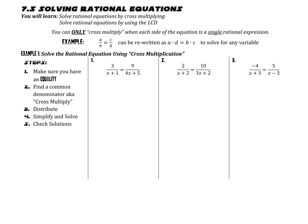If we have fractions equal to fractions, we can find a common denominator, as we talked about in the last lesson. So I could multiply this by (x+1)/(x+1), and I could multiply this fraction by (4x+5)/(4x+5). Now what I have is 3 times (4x+5), which is 12x+15 over the common denominator (x+1)(4x+5). And this is going to be equal to, if I distribute the numerator on the other side, 9x+9 over (4x+5)(x+1).